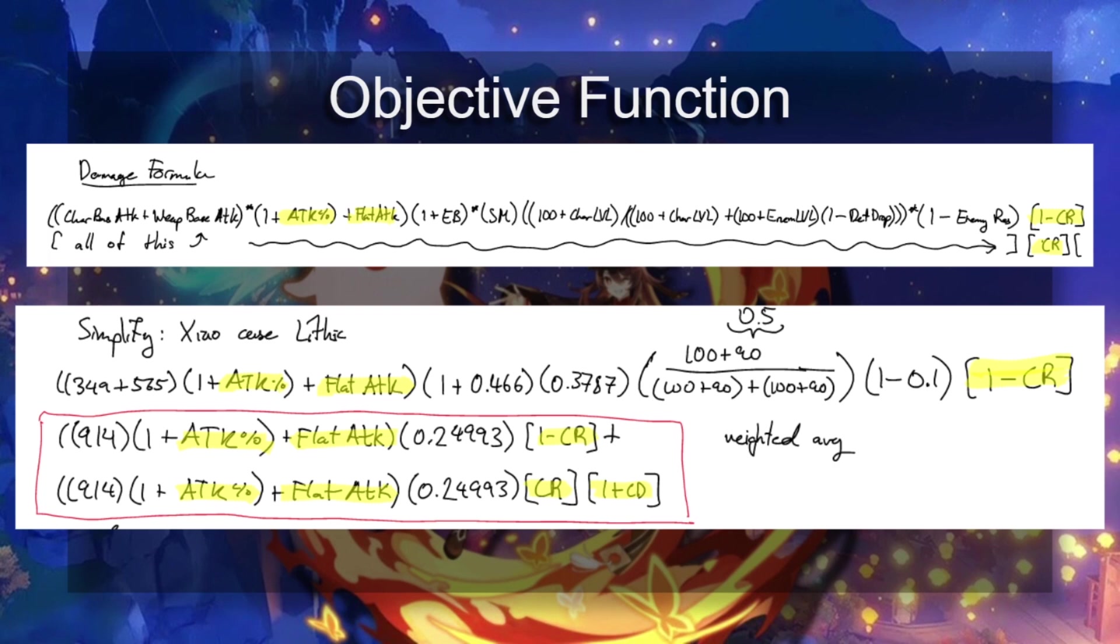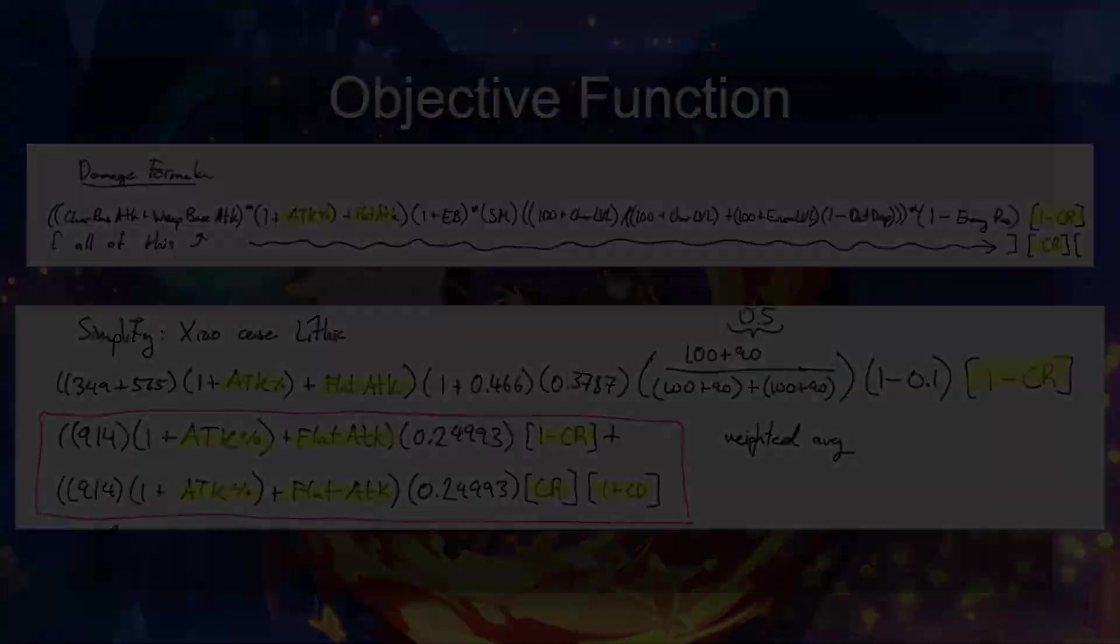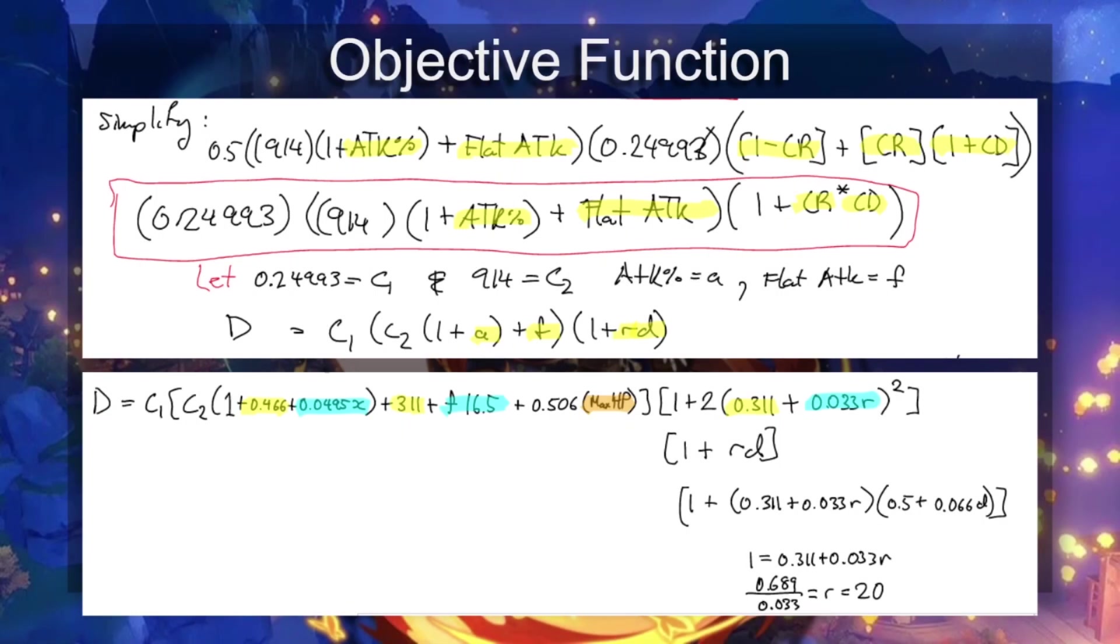The objective function is the damage formula. It was in the Excel, and it's up here on the top. In yellow, I've got highlighted the variables, and here I just simplified. You can look through this and see if I made any mistakes. In the red box, we can see the weighted average. That's basically weighting the non-crits with the non-crit rate, and then the critical hits with the crit rate.